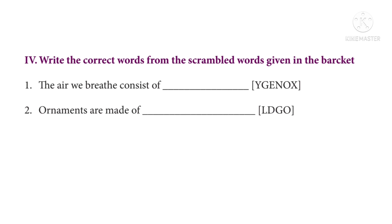Roman numeral four: write the correct words from the scrambled words given in the bracket. Question number one: the air we breathe consists of dash. Answer: oxygen.